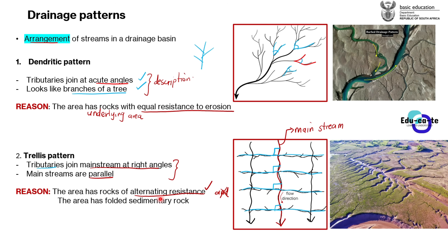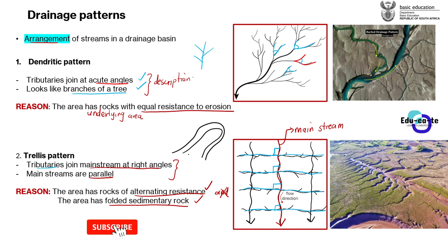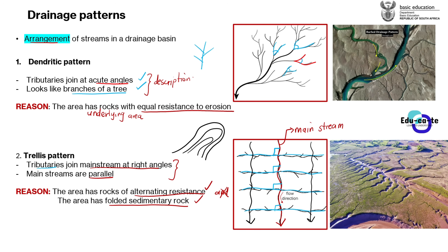The area has rocks with alternating resistance and different resistances to erosion. The second reason for the formation of a trellis pattern is if the area has folded sedimentary rock — layers of sedimentary rock that have been literally folded. If rainfall occurs in such an area, the drainage pattern that forms will be a trellis pattern. So either alternating rock resistance or folded sedimentary rocks explains the trellis pattern.